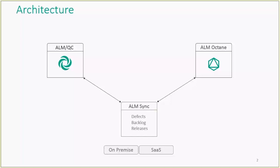The links that you can configure are the defect entity, backlog entity which resides in epic, feature and user story, and also releases. In this session we will cover a live demo showing how to configure those links and how the end results look both in ALM QC and in ALM Octane.